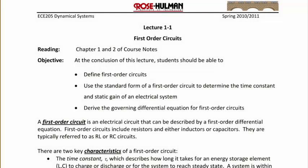Today's topic is first order circuits, and the lecture has the following learning objectives: define first order circuits, use the standard form of a first order circuit to determine the time constant and static gain of an electrical system, and derive the governing differential equation for the first order circuit. A first order circuit is an electric circuit that can be described by a first order differential equation, thus the name first order circuit. First order circuits include resistors and either inductors or capacitors, and they are typically referred to as RL or RC circuits.